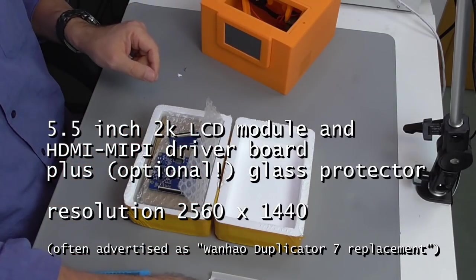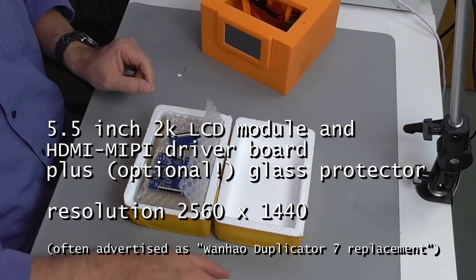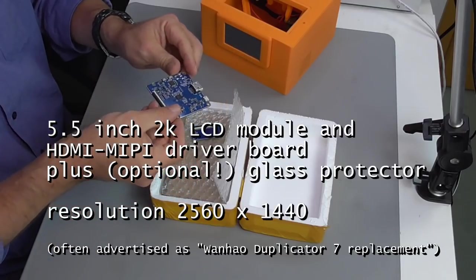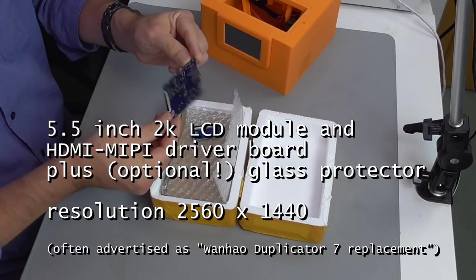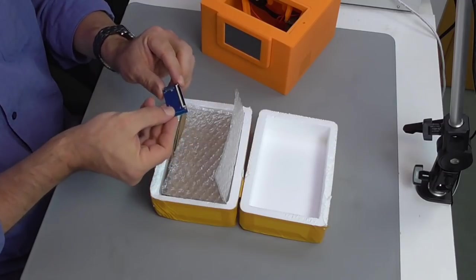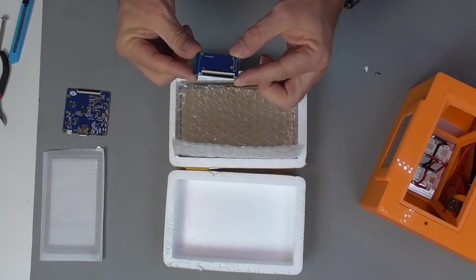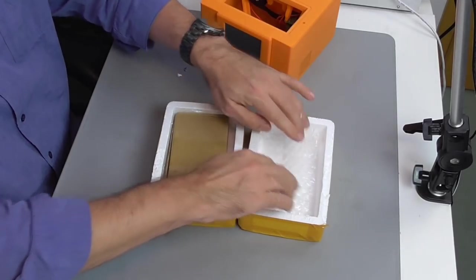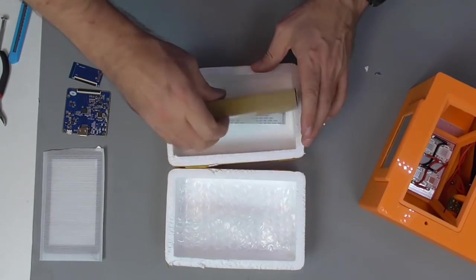The resolution of the display is 2560 x 1440 and you can find them often advertised as replacement part for Wanhao Duplicator 7 printers. Besides the glass protector, the box contains the MIPI driver board, a tiny adapter board to interconnect the flat ribbon cables of different sizes and the HDMI display itself.